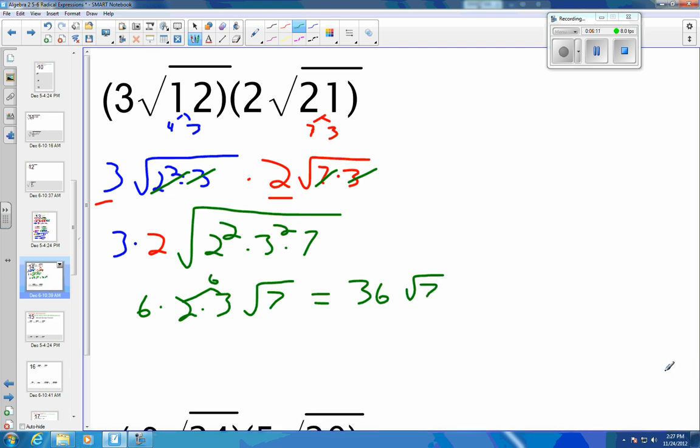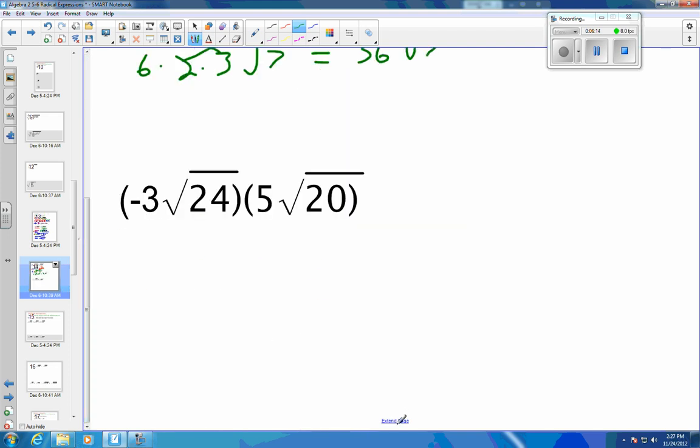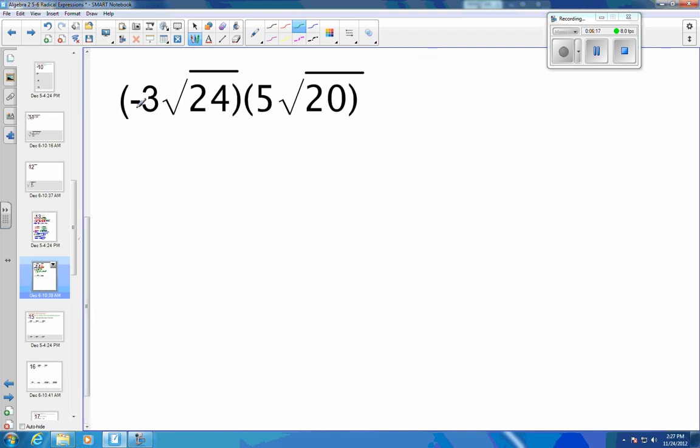And last example. So I'm going to have a negative 3 times 5. I'll just put those together right away. So that's going to be a negative 15. Then I'm going to deal with my 24. And I want square roots. I want groups of 2. So that's going to be 24 is 4 times 6. And 6 is 2 times 3. So hopefully we see 4 times 2 is 8. 8 times 3 is 24. So I'm breaking it out. So I see my groups of 2. 20. 20 is 4 times 5. So you see where I went with that.